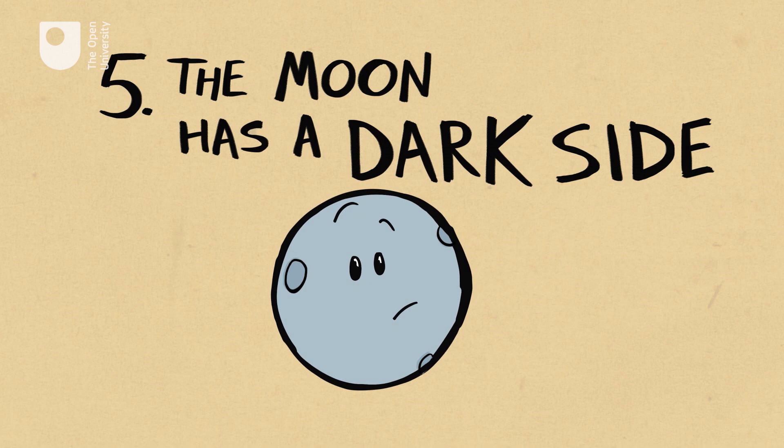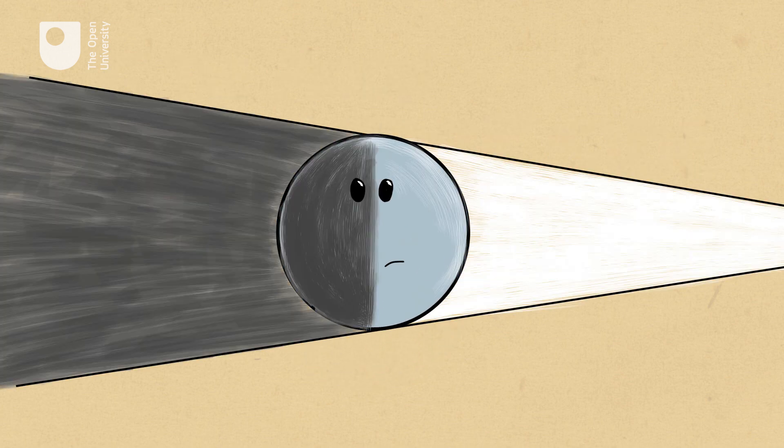Like every object in the solar system, only one side of it can be illuminated by the Sun at once, so half is sunlit and half is in darkness. However, the Moon rotates on its axis, so that all sides of it see the Sun eventually.